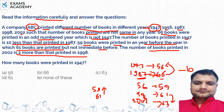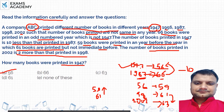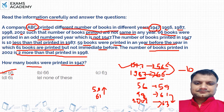Now the question asks: how many books were printed in 1947? Based on all the data, the answer is 56.